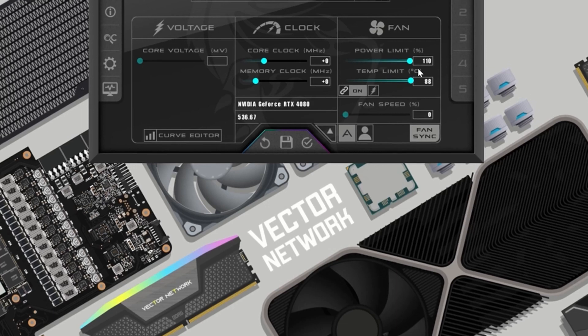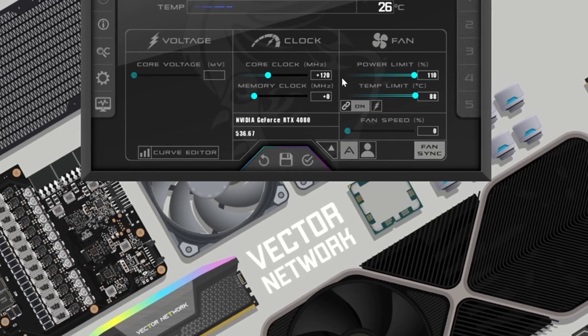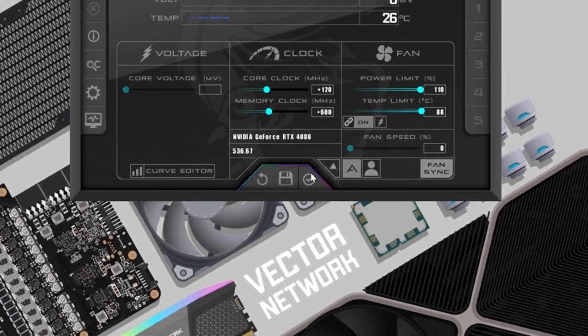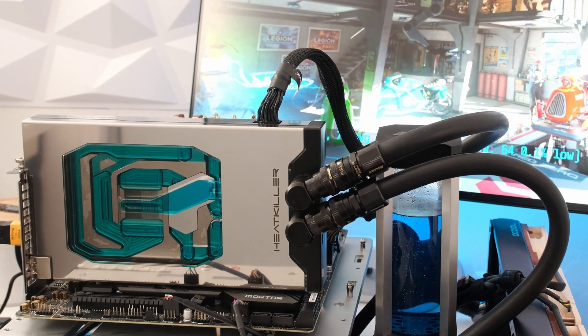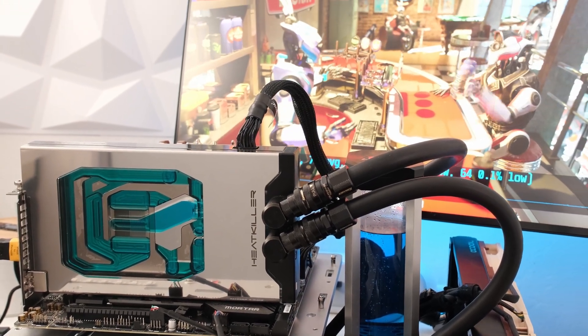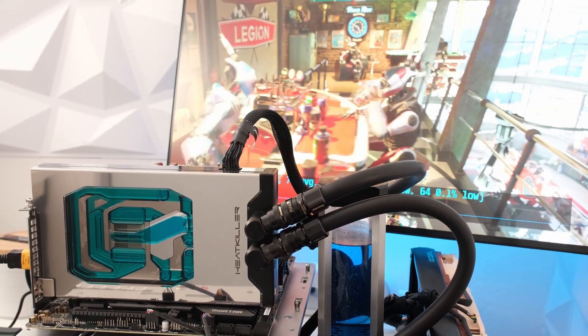Overclocking by increasing the power limit to 110%, adding 120 megahertz to the core and 600 megahertz to the memory clock, the GPU core and memory temperatures were both 4 degrees higher compared to 100% power limit.